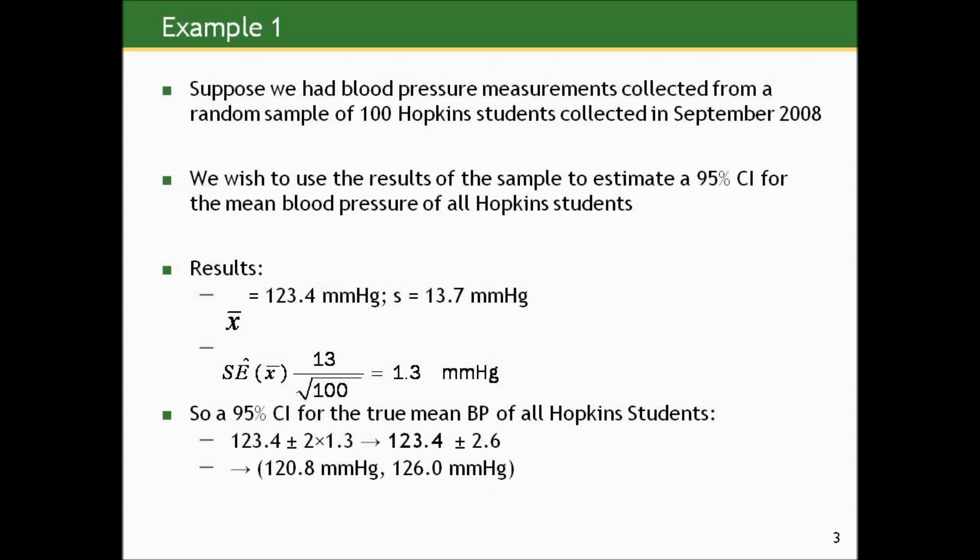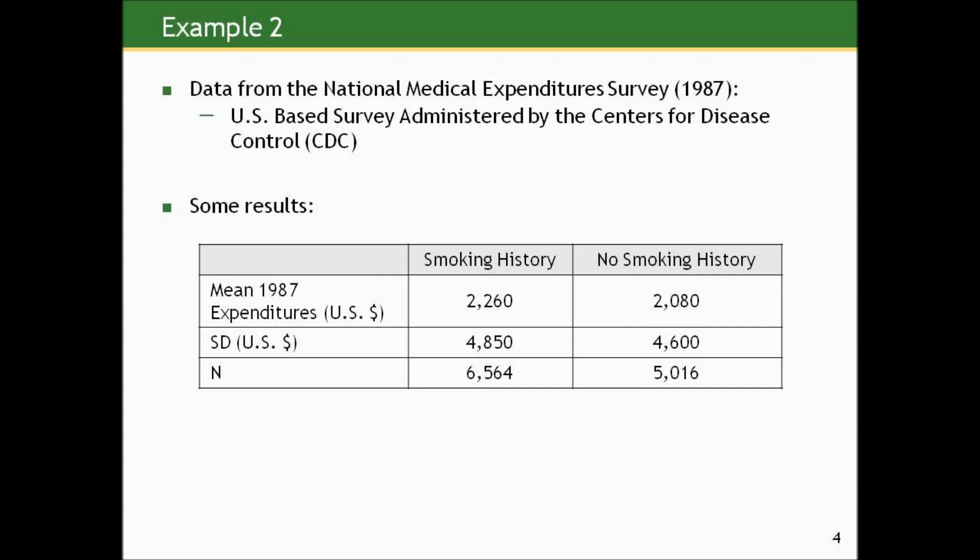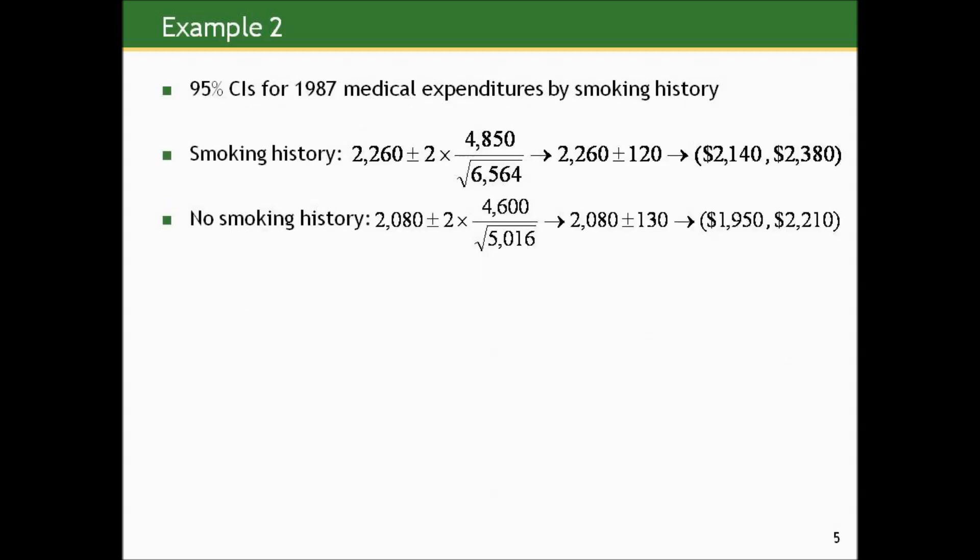We'll talk more about comparing populations later in the course. For another example, data from the National Medical Expenditure Survey conducted in 1987, administered by the Centers for Disease Control in the U.S., compares mean medical expenditures for those with a history of smoking versus no history of smoking. The sample sizes were about 6,500 with a smoking history and 5,000 without. Mean expenditures were $2,260 for the smoking group and $2,080 for the non-smoking group, with standard deviations of $4,850 and $4,600 respectively.